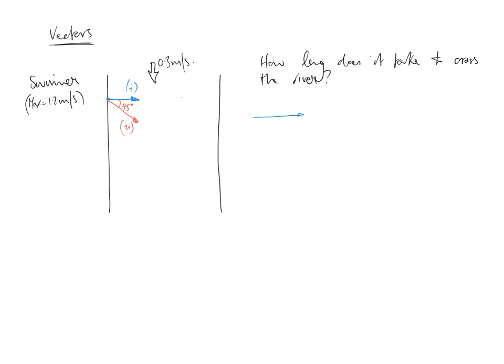It's not just the speed of the swimmer that we need to consider, but also the speed of the river. That will result in a different resultant speed, VR, and indeed an angle — let's call it alpha — because that person will not go completely across the river, which I should say is 30 meters across. But that person will move a certain angle away from the perpendicular to the bank. So let's find out VR and alpha.